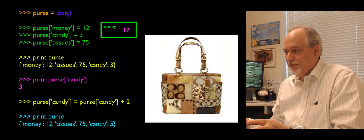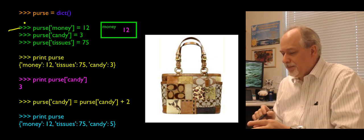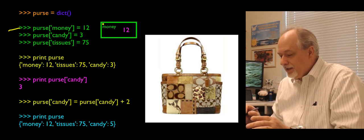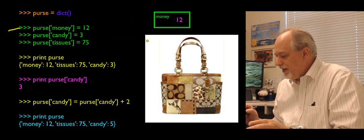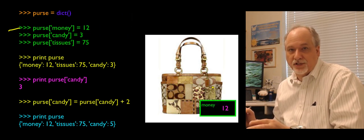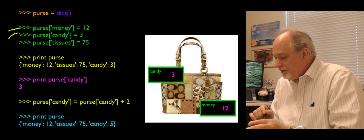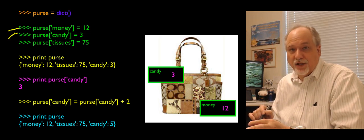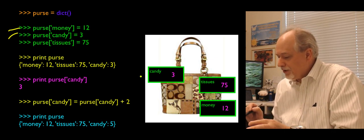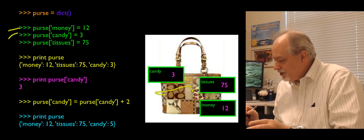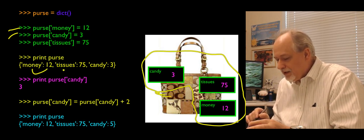Here's a picture of how this works. Purse sub money equals 12 creates a key-value connection — money is the label for 12. Then we put the value 3 in with the label candy, and 75 in with the label tissues. When we print the dictionary, it gives us both the label and the value, using curly brace syntax.